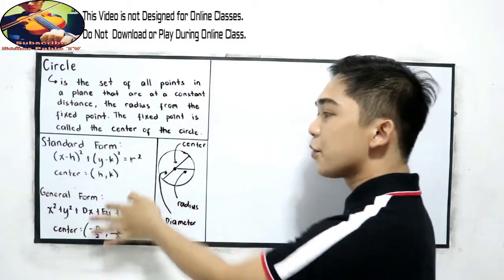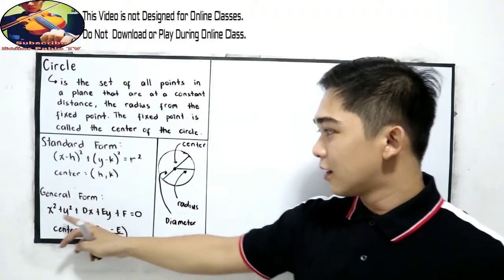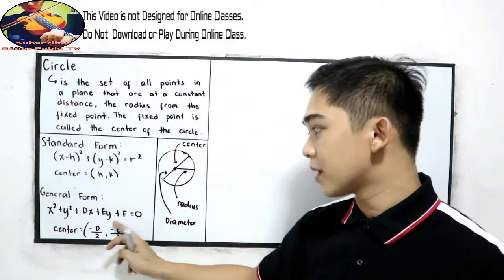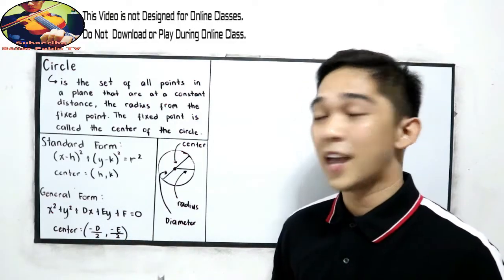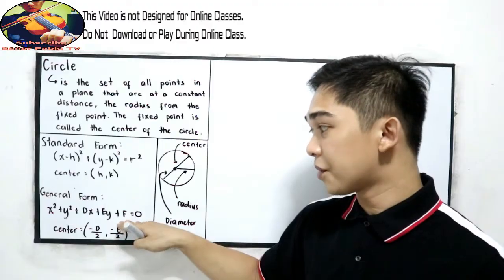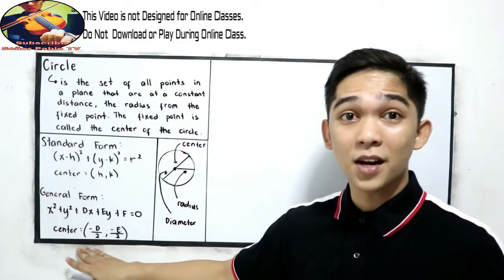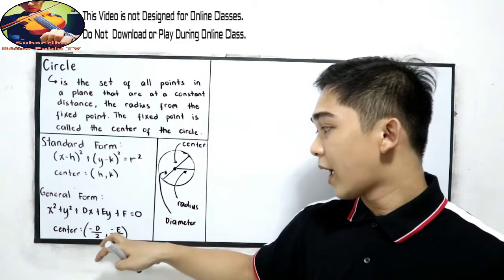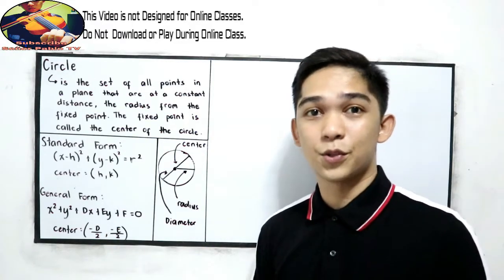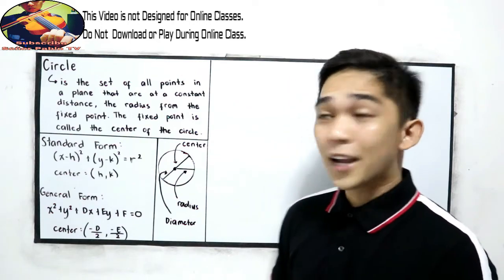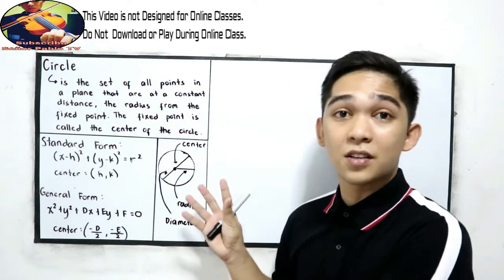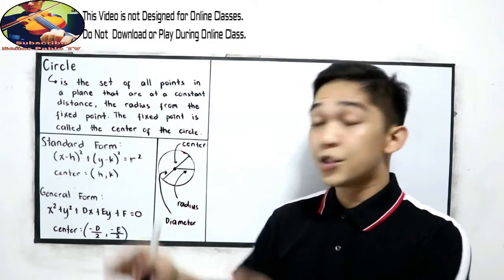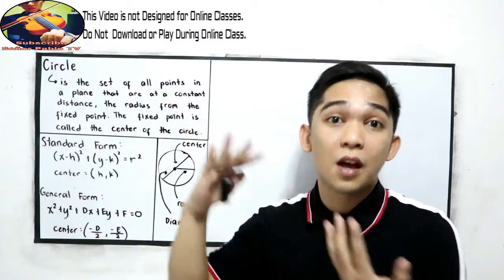Next, we have the general form: x squared plus y squared plus dx plus ey plus f equals 0. In the general form, we have a shortcut formula for the center: negative d over 2, and negative e over 2. To better understand finding the center, let us first discuss transforming general form into standard form.